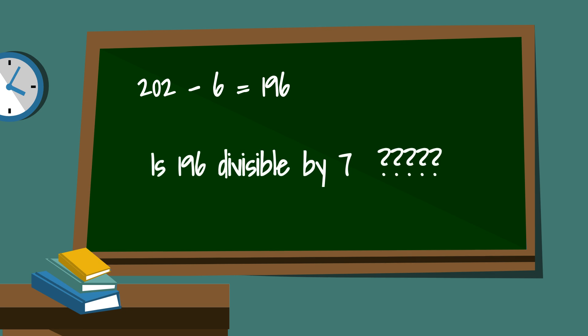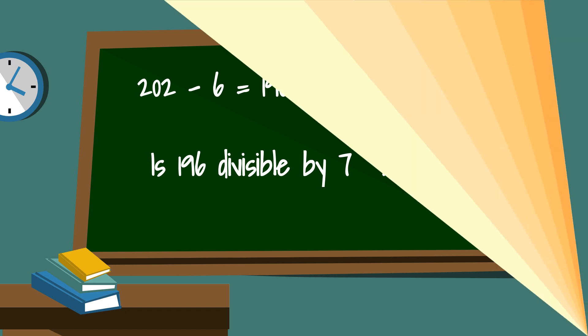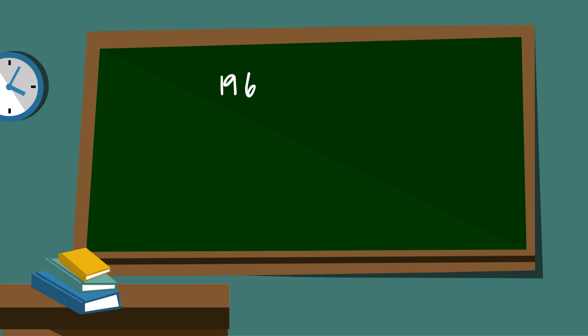It's also a fairly large number so I'm just going to repeat the process. I'm going to take the last digit of 196 which is 6 and double it which is 12. Now 19 minus 12 is 7.